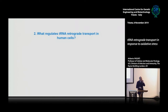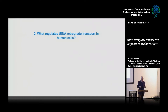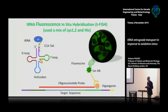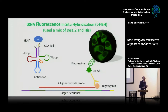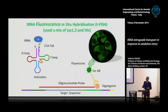The first part was about this pathway. Now: what is this pathway for and how is it regulated? To find out more, we developed an assay called T-FISH — tRNA fluorescent in situ hybridization. It uses a probe homologous to the tRNA with a digoxigenin tag recognized by a fluorescently labeled antibody.